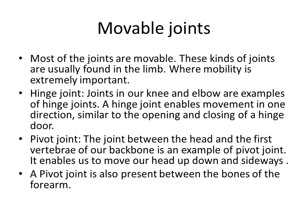In our body, mostly all the bone joints are mobile. These kinds of joints are found in the limbs where mobility is extremely important. There are four types of joints: hinge joint, pivot joint, gliding joint, and ball and socket joint.